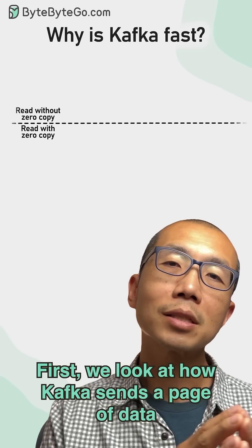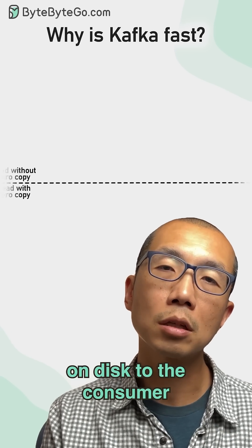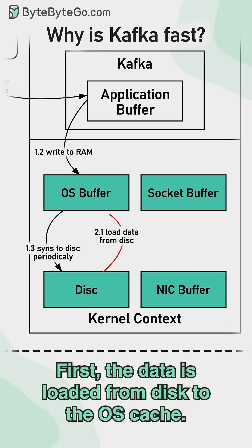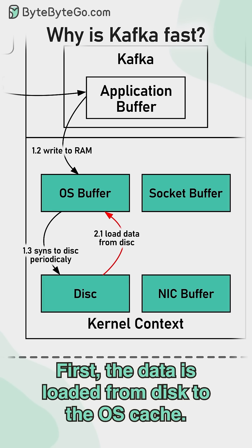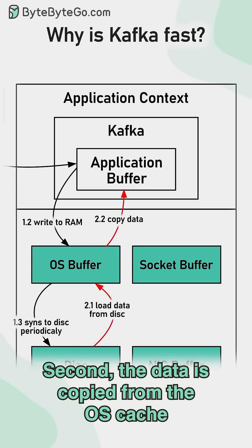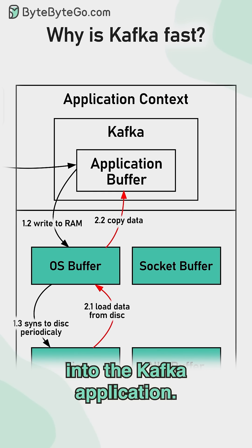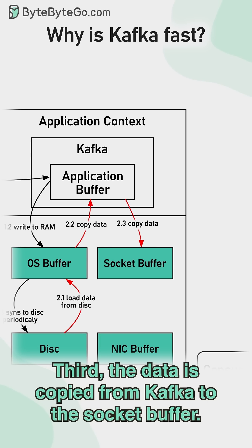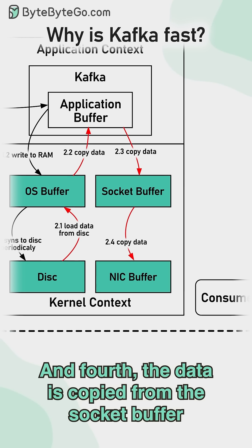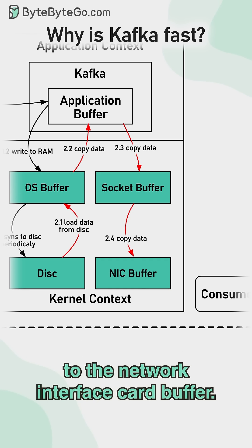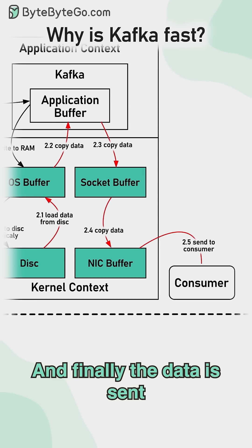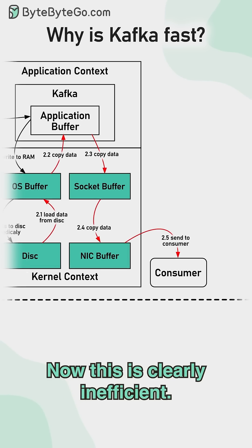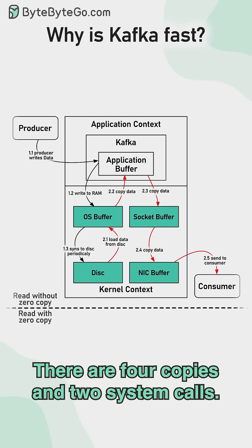First, let's look at how Kafka sends a page of data on disk to the consumer when zero copy is not used at all. First, the data is loaded from disk to the OS cache. Second, the data is copied from the OS cache into the Kafka application. Third, the data is copied from Kafka to the socket buffer. And fourth, the data is copied from the socket buffer to the network interface card buffer. Finally, the data is sent over the network to the consumer. This is clearly inefficient — there are four copies and two system calls.